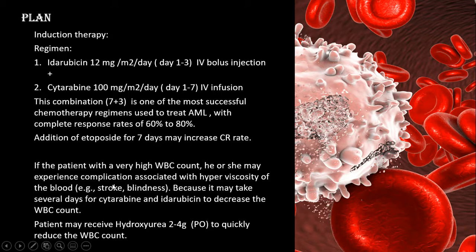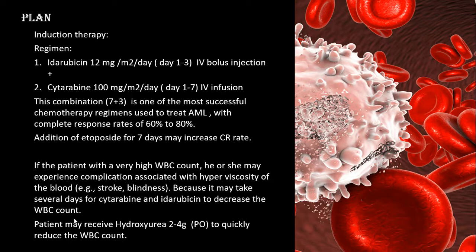One additional consideration: if the patient has a very high WBC count, they may experience complications associated with hyperviscosity of the blood, such as stroke or blindness, because it may take several days for cytarabine and daunorubicin to decrease the WBC count. In this condition, hydroxyurea 2 to 4 grams orally may be given to rapidly reduce the WBC count.